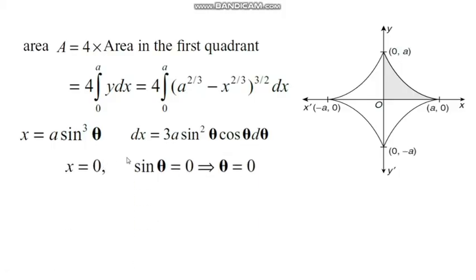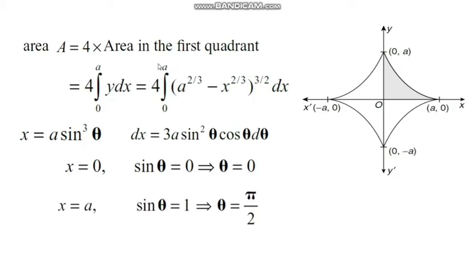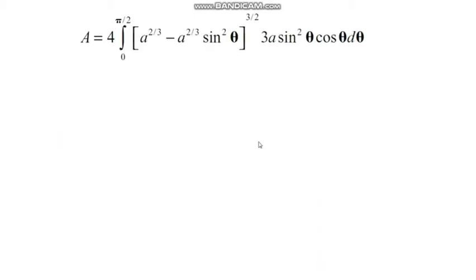We already have the limits of x from 0 to a. When x = 0: 0/a = sin³θ, so sinθ = 0, giving θ = 0. When x = a: a/a = 1 = sin³θ, so sinθ = 1, giving θ = π/2, since θ = sin⁻¹(1). Therefore, the limits of θ are 0 and π/2.